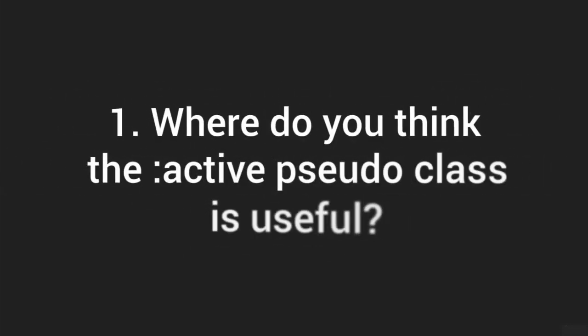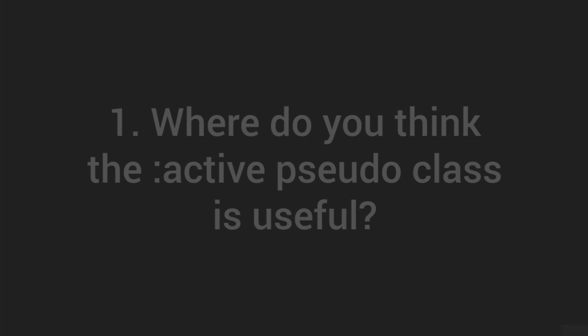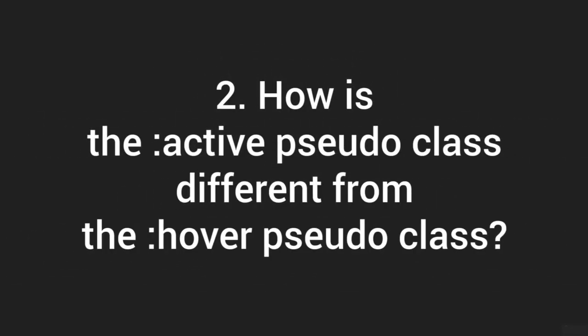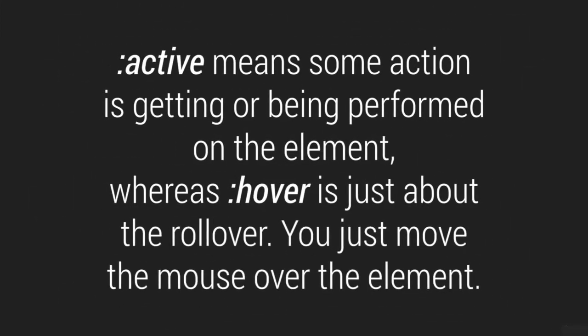Where is ':active' useful? When you want CSS applied to elements where an action is being performed — mouse button pressed, or enter/spacebar keys pressed. How is ':active' different from ':hover'? Active means some action is being performed on the element, while hover is just about rolling the mouse over the element. Active requires a click or keypress; hover only requires mouse-over.